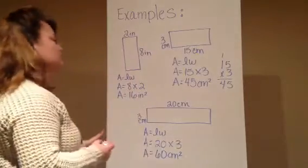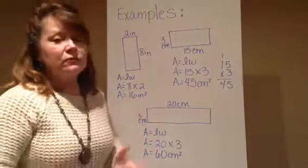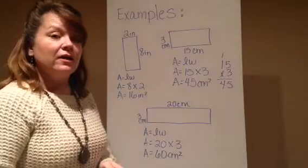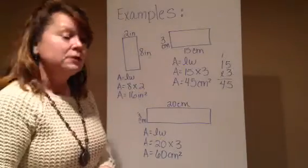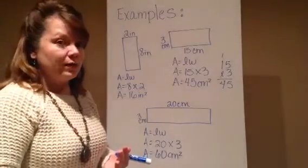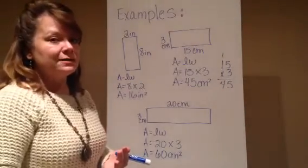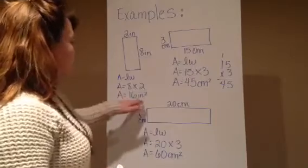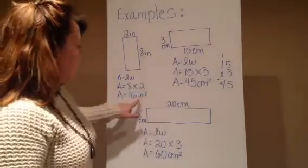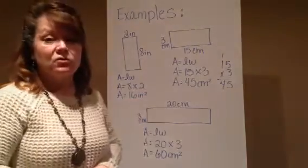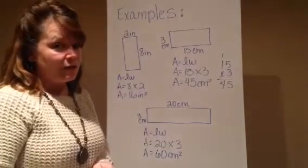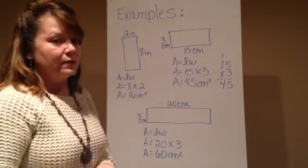Okay, so just to review, my formula for finding the area of a rectangle is A equals length times width, or A equals base times height. And I have to make sure that I label my unit and make sure that it's squared every time. Otherwise it's incorrect, so we've got to make sure that we do that.